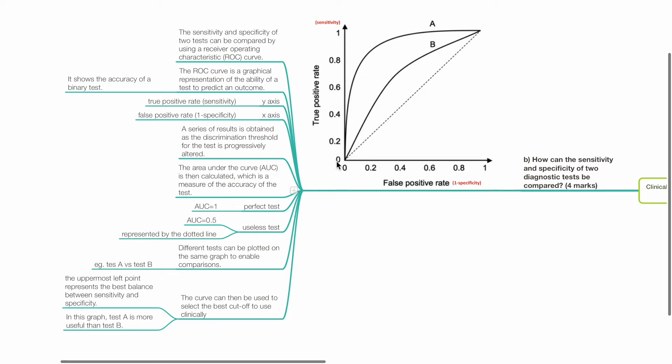The y-axis is the true positive rate or sensitivity. The x-axis is the false positive rate or 1 minus specificity. A series of results is obtained as the discrimination threshold for the test is progressively altered. The area under the curve, AUC, is then calculated, which is a measure of the accuracy of the test.